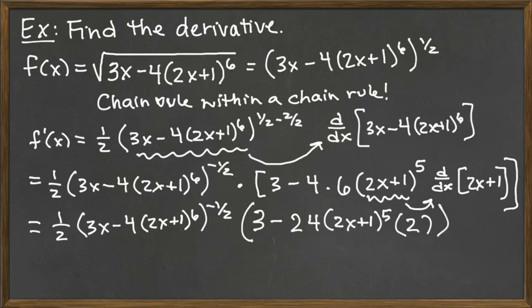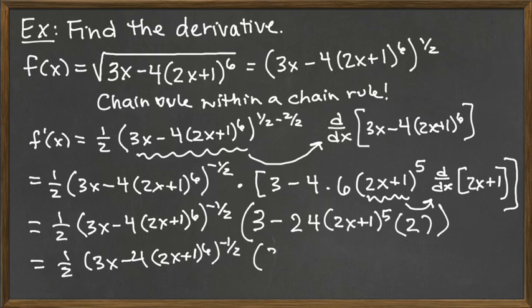We can do just a tad bit more cleanup that wouldn't be too complicated to make our answer look a little bit nicer. We could have the 24 here and the 2 that's here be multiplied together. And so we could complete it by making that the 48 that's sitting out front to finish us off here.